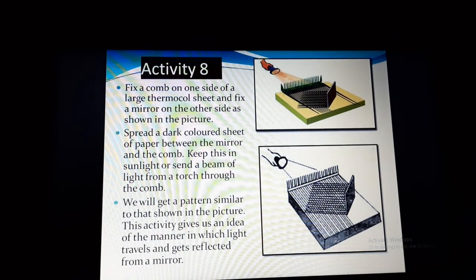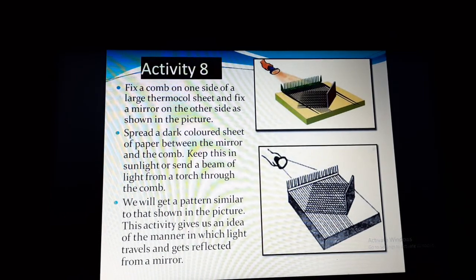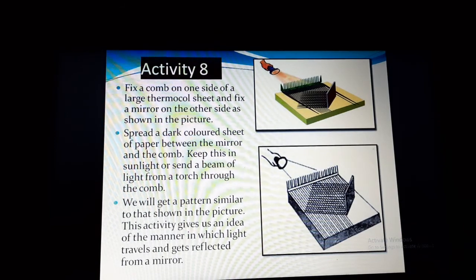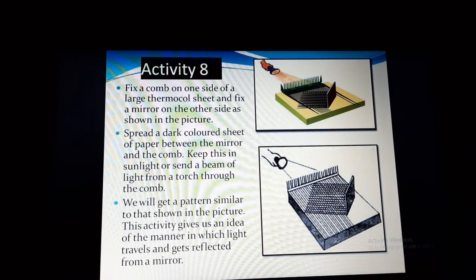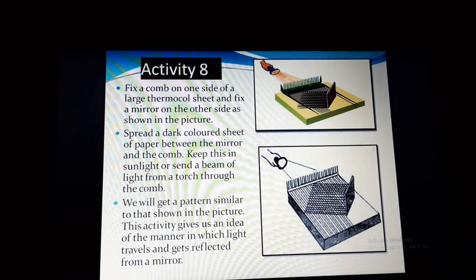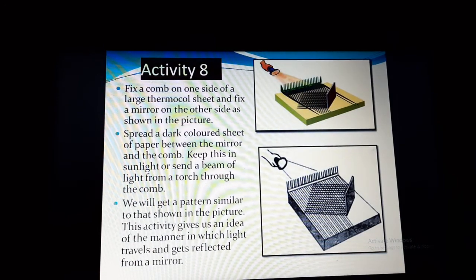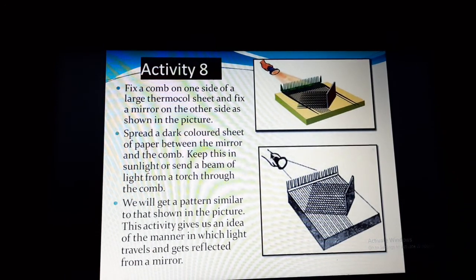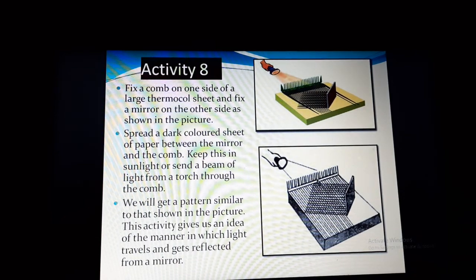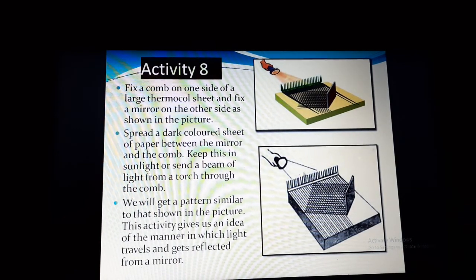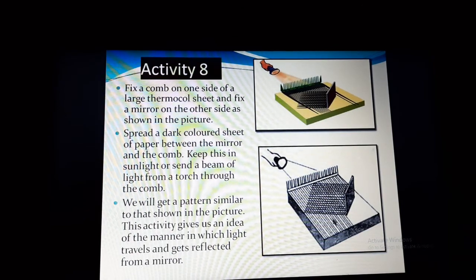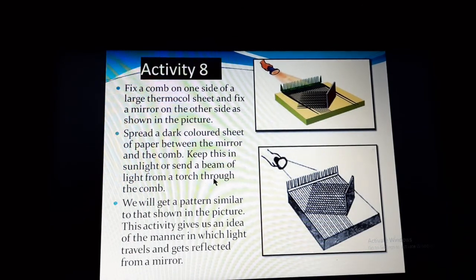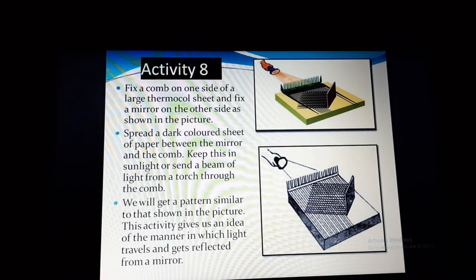And then you have to spread a dark colored sheet of paper between the mirror and the comb. Keep this in sunlight or you can use a torch as it is shown over here. You can use a torch so that the light will be focused on the comb. Keep the torch light in such a way so that it will pass through the comb.